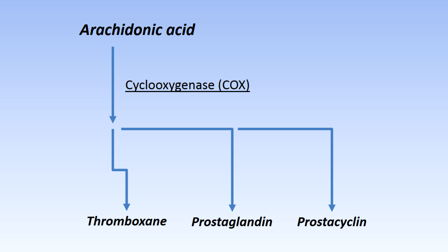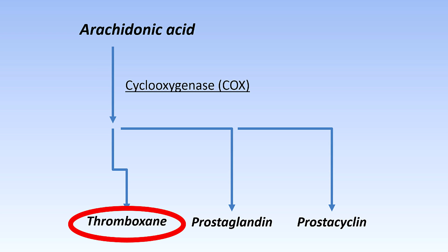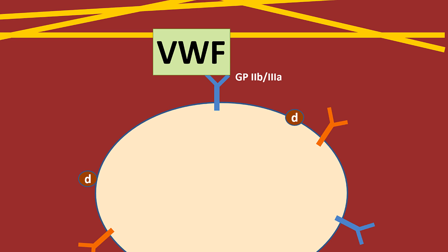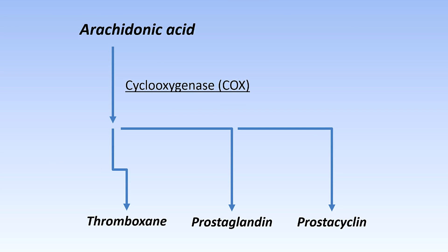Now that we have an understanding of how platelets work, we can look at the drugs we can use to manipulate how platelets work. First of all, aspirin. A substance called arachidonic acid is processed by a number of enzymes to become important chemical mediators including thromboxane, prostaglandin and prostacyclin. Thromboxane is the one we're really interested in — it's one of the components of the dense granules that help with platelet activation. Aspirin irreversibly binds the cyclooxygenase, known as the COX enzyme, and reduces the amount of thromboxane around, which then reduces the amount of platelet activation happening.